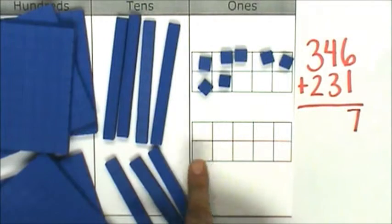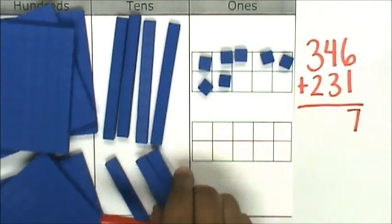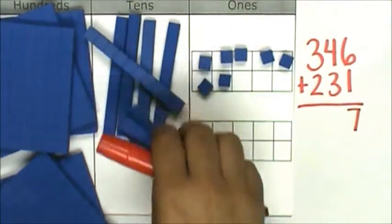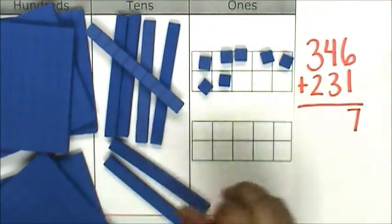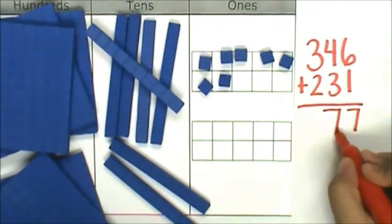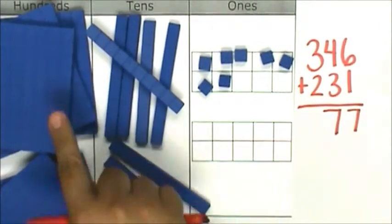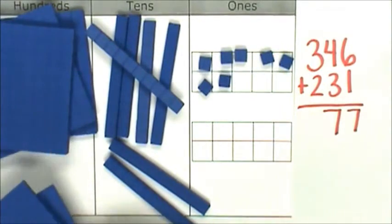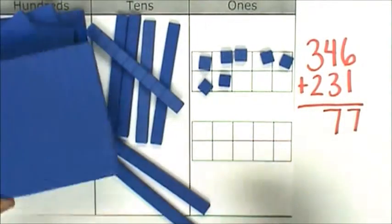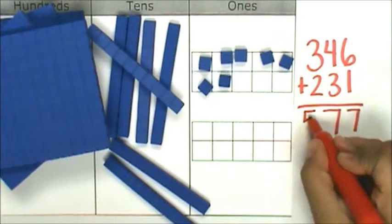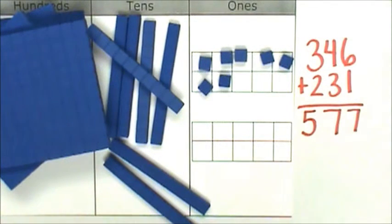4 tens and 3 tens is 5, 6, 7—7 tens. 3 hundreds and 2 hundreds is 5 hundreds. My answer is 577 markers.